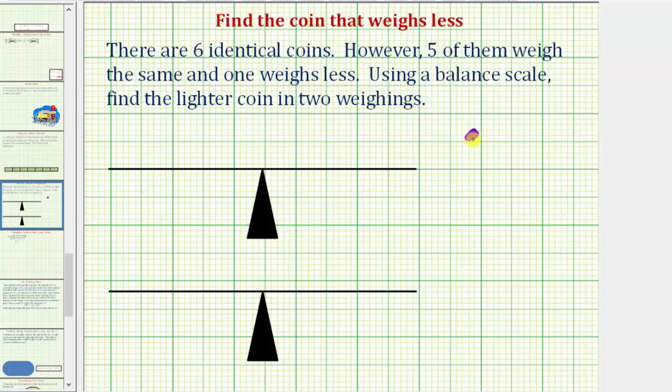So let's say these are the six coins. Again, they're identical, but one of them is lighter. So we can't tell by looking, but for our solution, let's just say this is the lighter coin. We want to identify this coin in just two weighings.